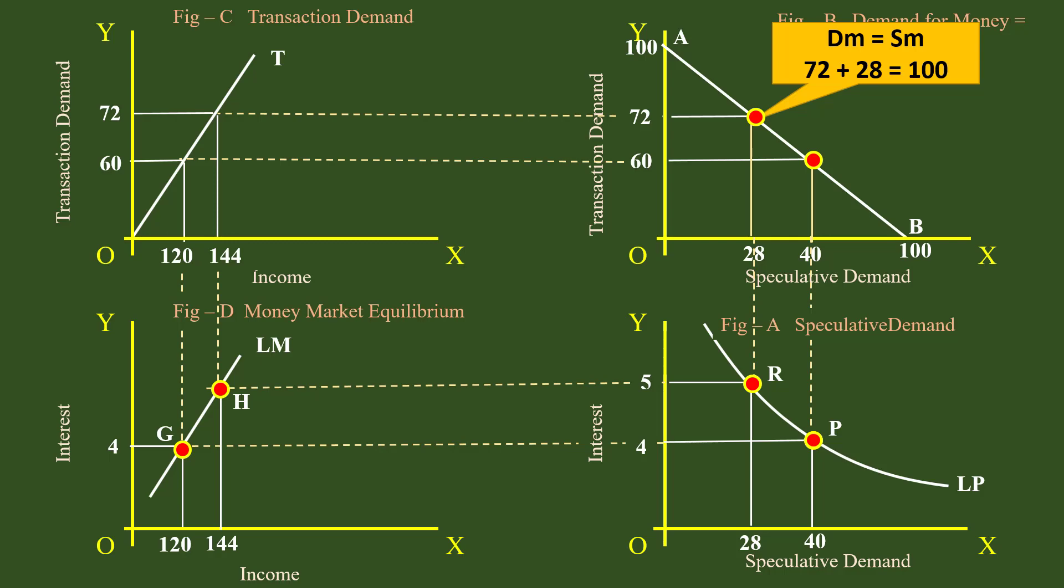After an increase in income, equilibrium is possible only at a higher interest rate. The reverse is equally true. After a fall in income, equilibrium is possible only at a lower interest rate. This is the reason for the LM curve to slope upwards.